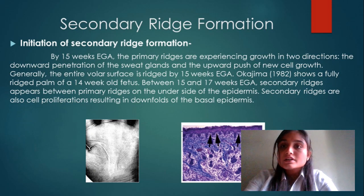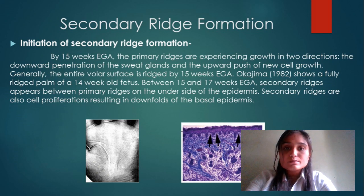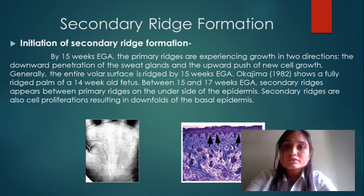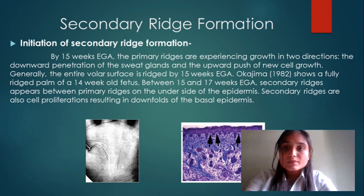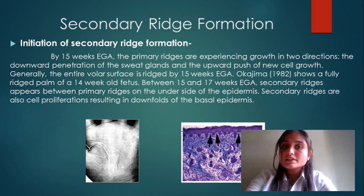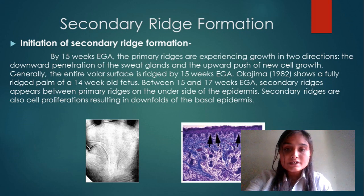Secondary ridge formation: by 15 weeks EGA the primary ridges are experiencing growth in two directions — the downward penetration of the sweat glands and the upward push of new cell growth. Generally the entire volar surface is ridged by 15 weeks EGA. Between 15 and 17 weeks EGA, secondary ridges appear between primary ridges on the underside of the epidermis. Secondary ridges are also cell proliferations resulting in downfolds of the basal epidermis.